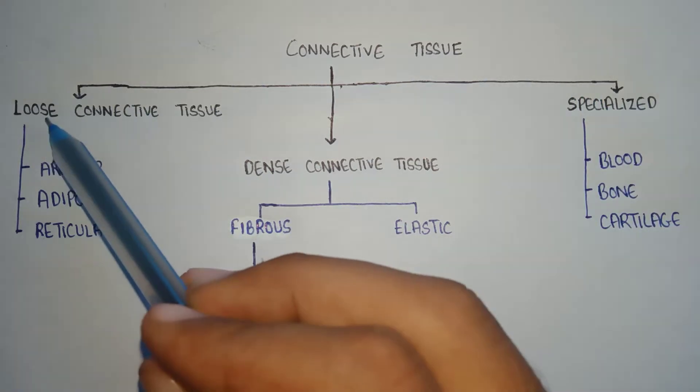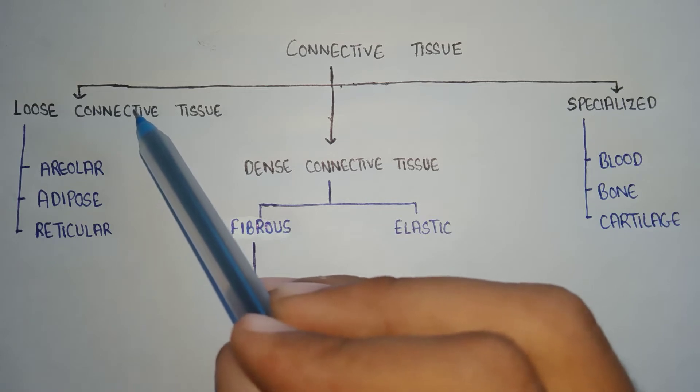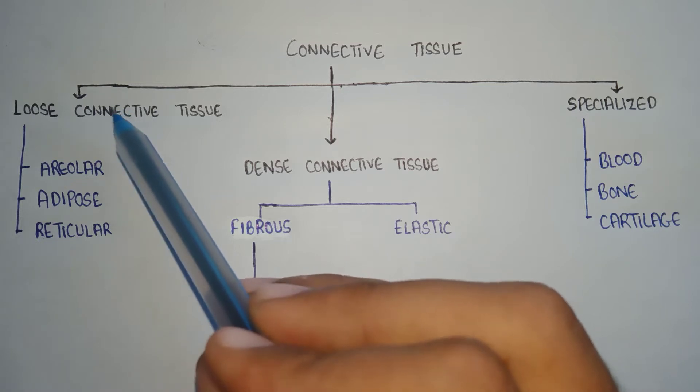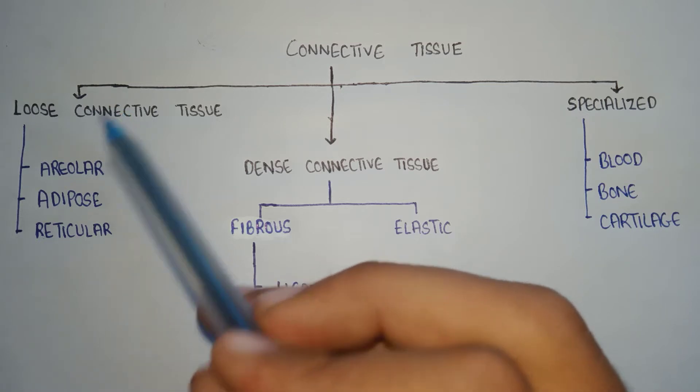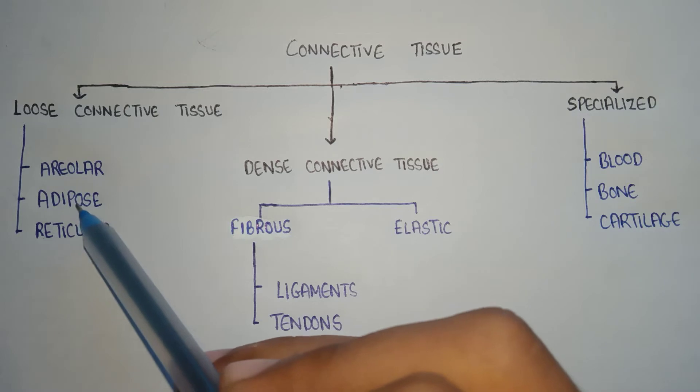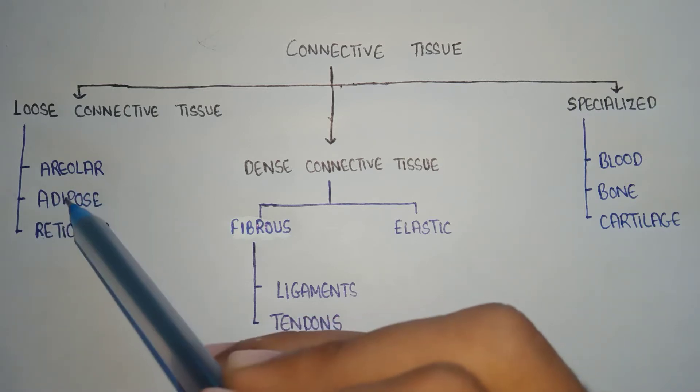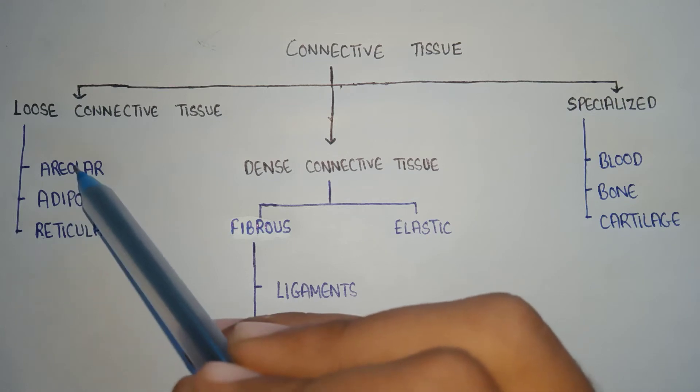In loose connective tissue, the fibers are arranged in a loosely manner or the fibers are packed loosely. Loose connective tissue are divided into three parts: areolar tissue, adipose tissue, and reticular tissue. These are the examples of loose connective tissue.